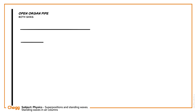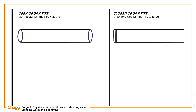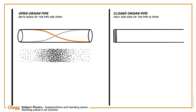In an open organ pipe, both sides of the pipe are open. On the other hand, the pipe that is closed on one side and open on the other side is known as a closed pipe. Let's discuss how the harmonics are observed in an open pipe. At the open end, the displacement of the air particles is maximum and pressure is minimum, which means that at the open end of the pipe, antinodes are observed.